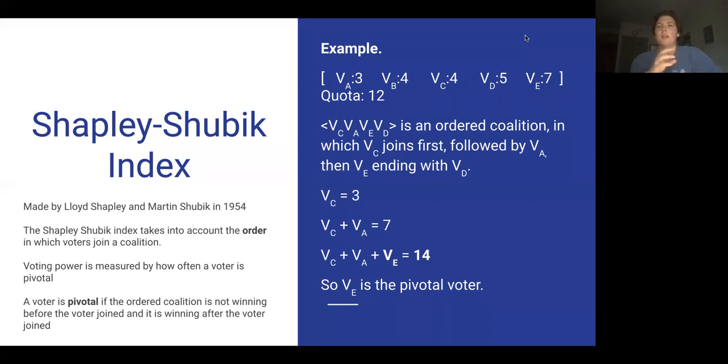Because every winning coalition, whether it's the second voter or the last voter, some voter had to be the one that tipped them over the edge. Every coalition has at least one pivotal voter. So in this example, we have a similar setup where there are five voters with different weights. The quota is 12 to pass anything. And this ordered coalition starts with voter C joining first, then voter A, then E, then D.